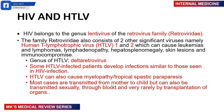I mention this because patients with human T-lymphotropic virus develop infections that are very similar to those with HIV. Those with HTLV can also have myelopathies and tropical spastic paraparesis. Most cases are transmitted from mother to child, but transmission can also happen sexually, through blood, and very rarely through organ transplants. We now screen for many conditions to prevent transmission during organ transplants and blood donations.